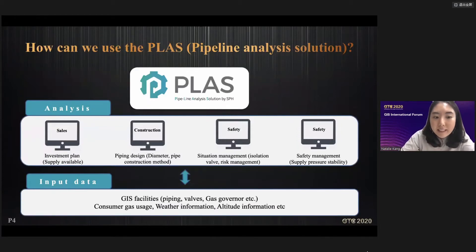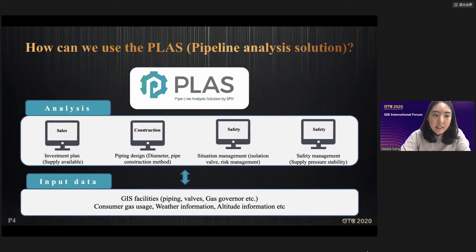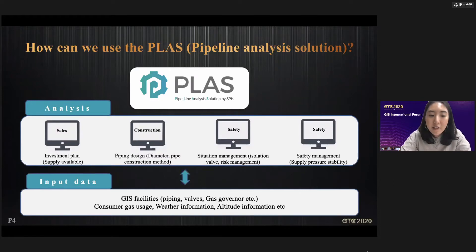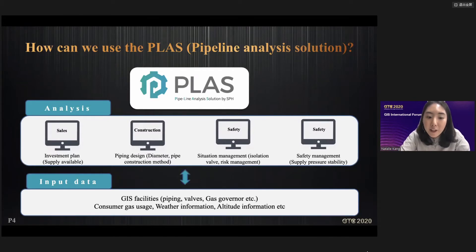Pipeline analysis solutions are used by various departments in gas companies. The sales staff will determine whether there is economic viability when a new gas supply area is created through PLUS and construct construction sites. The construction staff use PLUS to determine the construction method of piping for installing new gas facilities; they can simulate how they will actually do their construction. Safety staff use PLUS for isolation valve analysis and stability of supply pressure.